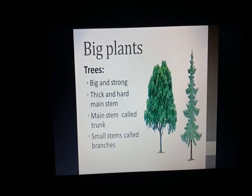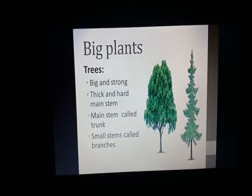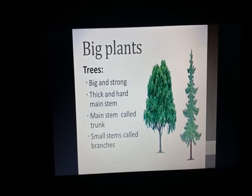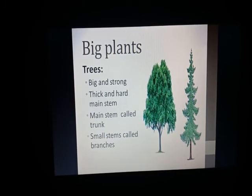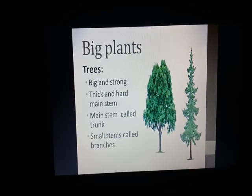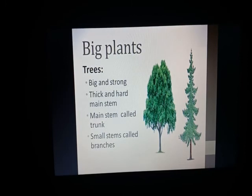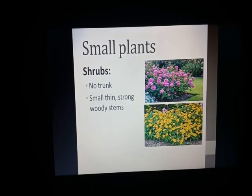These branches spread out into many small stems further on. We have seen two different types of trees in the pictures. The first tree has many spread-out branches, while the second tree is tall and its branches are not spread out like the first one. These are two different types of trees in our world.